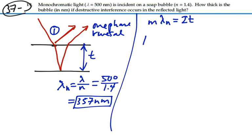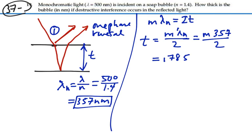Solving for the thickness, then, we have that the thickness will be equal to some integer times the wavelength inside the medium divided by two. So that is going to be equal to M times 357 nanometers divided by two, and that will give us 178.5 nanometers times M.